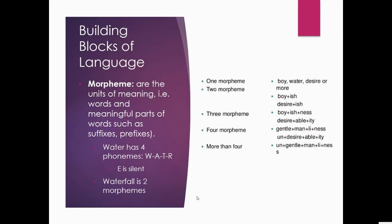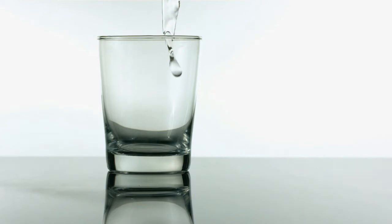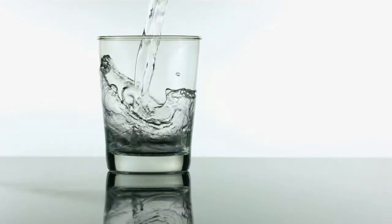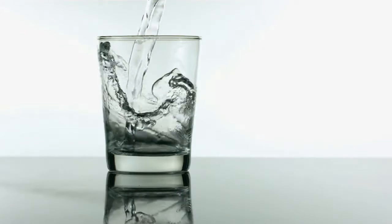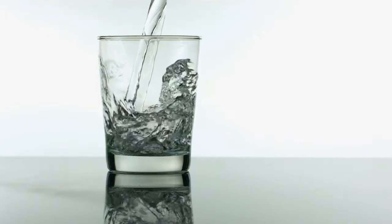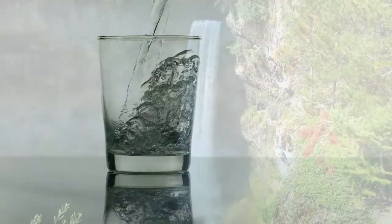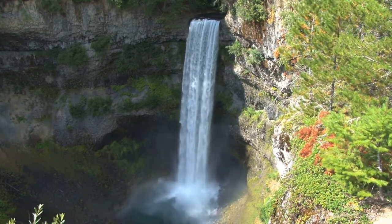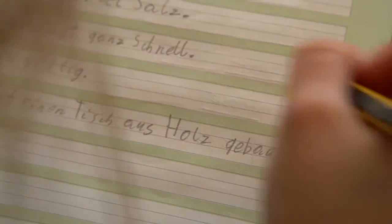When we put phonemes together, we get morphemes — the units of meaning, including words and meaningful parts of words such as suffixes and prefixes. For example, 'water' has four phonemes: W-A-T-ER. But for morphemes, taking 'water' and 'fall' and combining them gives us the word 'waterfall' — two morphemes forming one compound word.